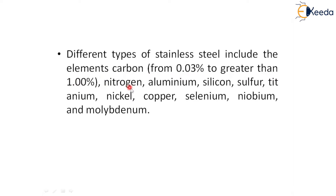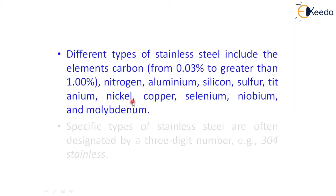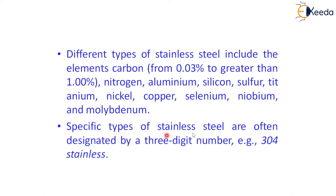Additional alloying elements include nitrogen, aluminum, silicon, sulfur, titanium, nickel, copper, selenium, niobium, and molybdenum. Specific types of stainless steel are often designated by a three-digit number — for example, 304 stainless steel.